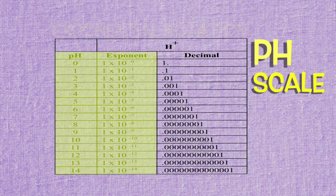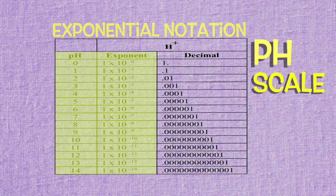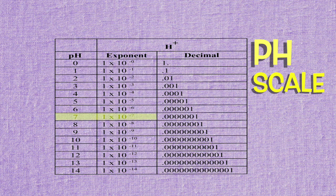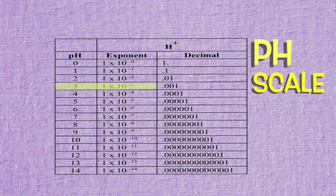Scientists use exponential notation to express large quantities without a lot of zeros. The exponent is the pH without the minus sign. pH 7 has an exponent of 7, and pH 3 has an exponent of 3. The exponent is also the number of decimal places — a pH of 7 has 7 decimal places, and a pH of 3 has 3 decimal places.